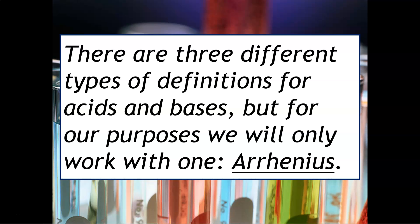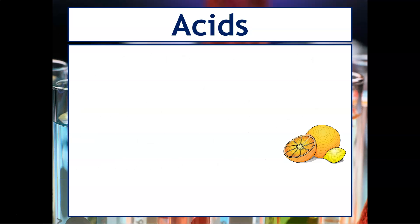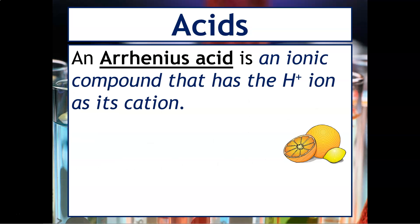There are three different types of definitions for acids and bases, but for our purposes in this class we will only work with one — the Arrhenius definition. An Arrhenius acid is defined as an ionic compound that has H+ as the cation.